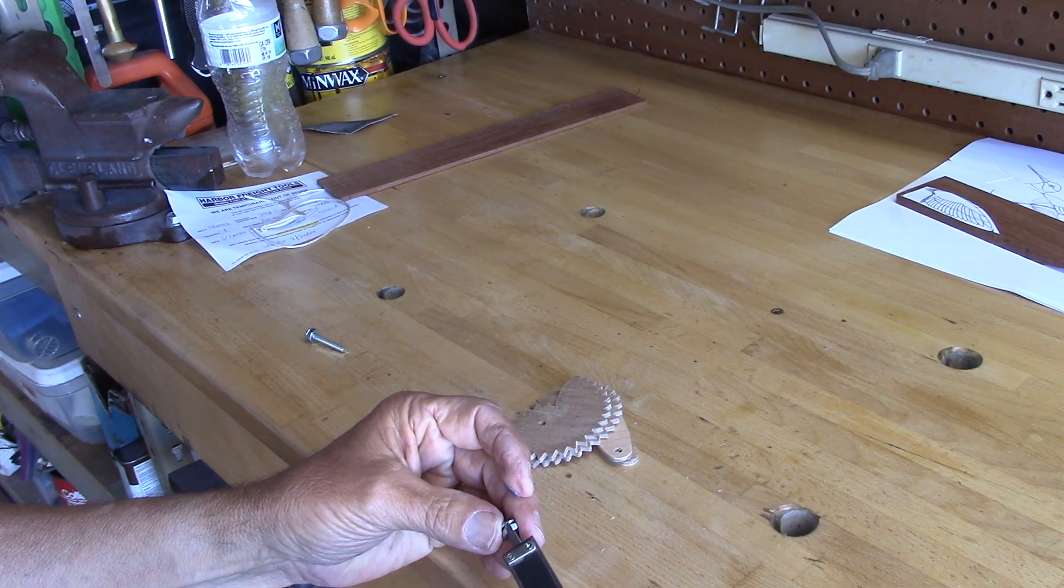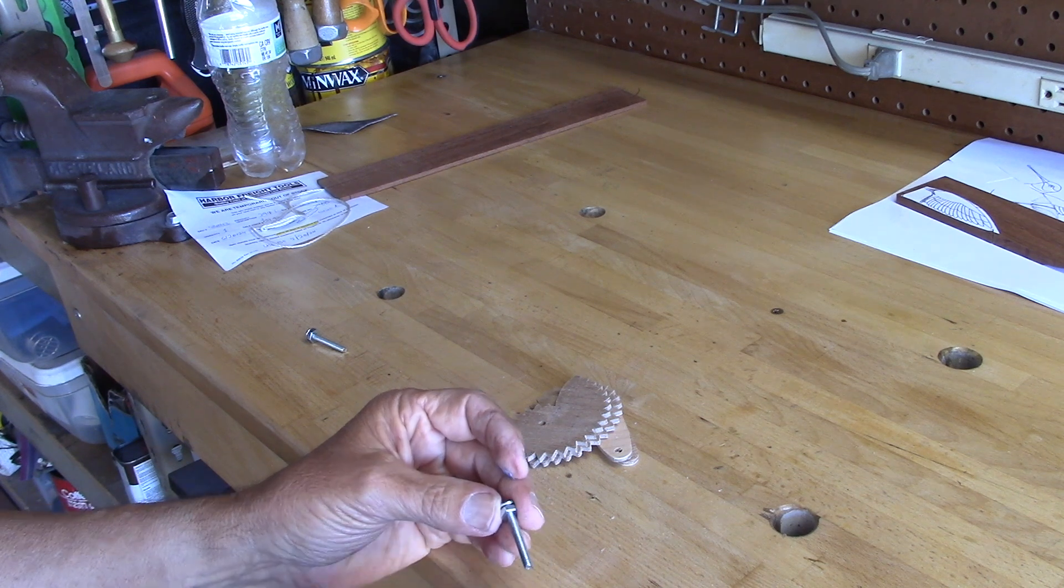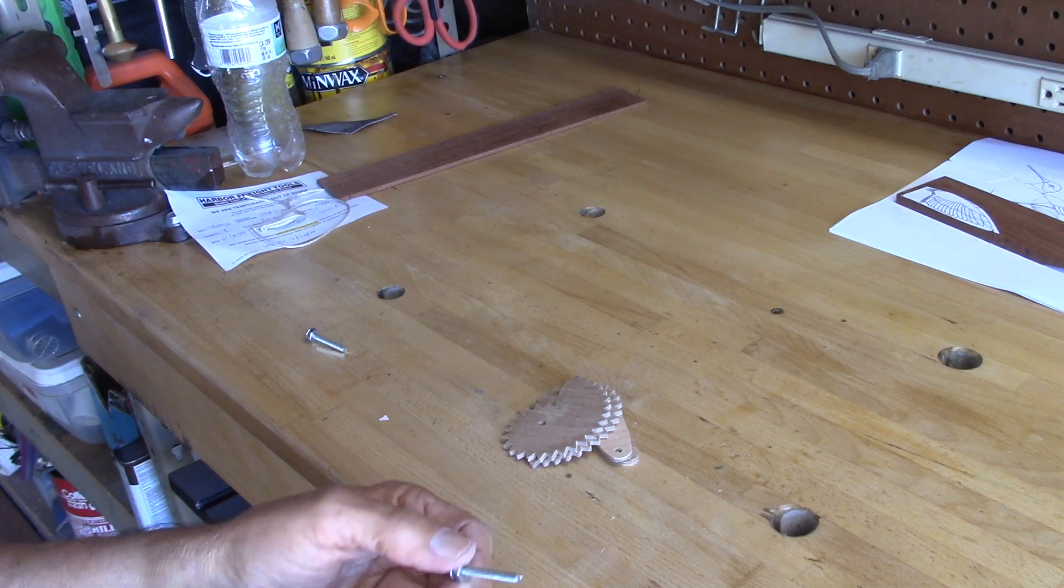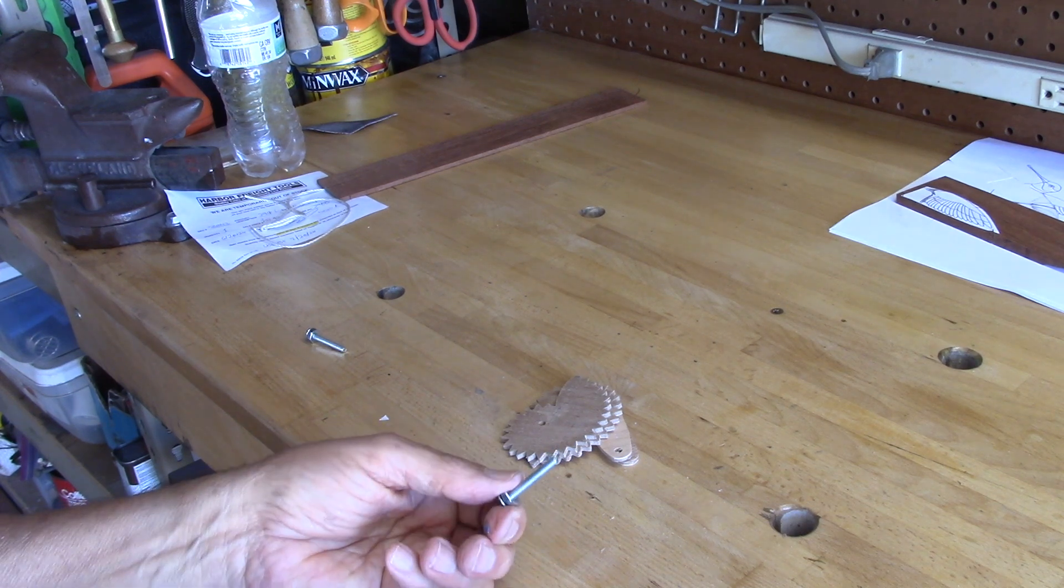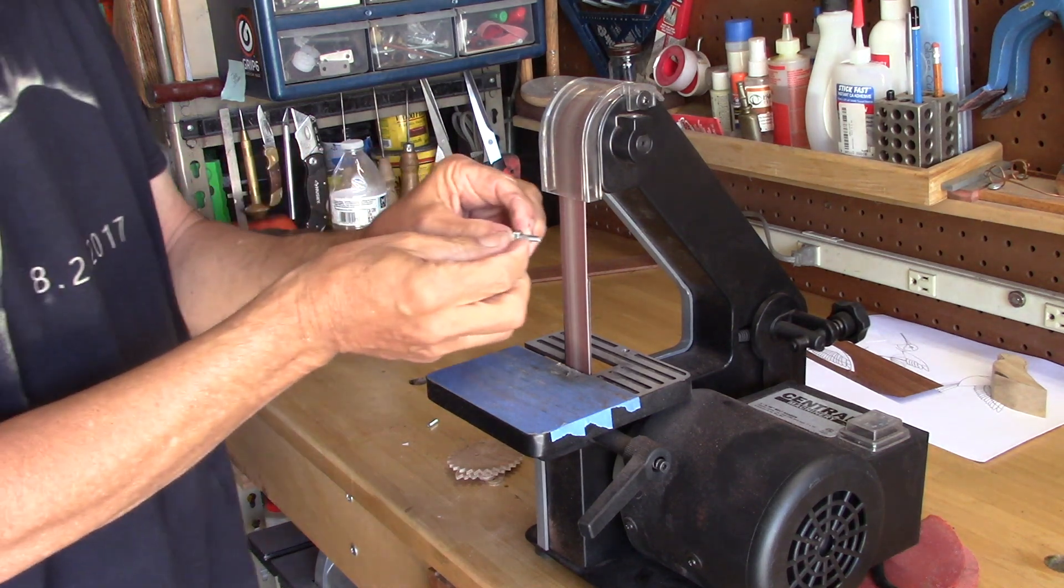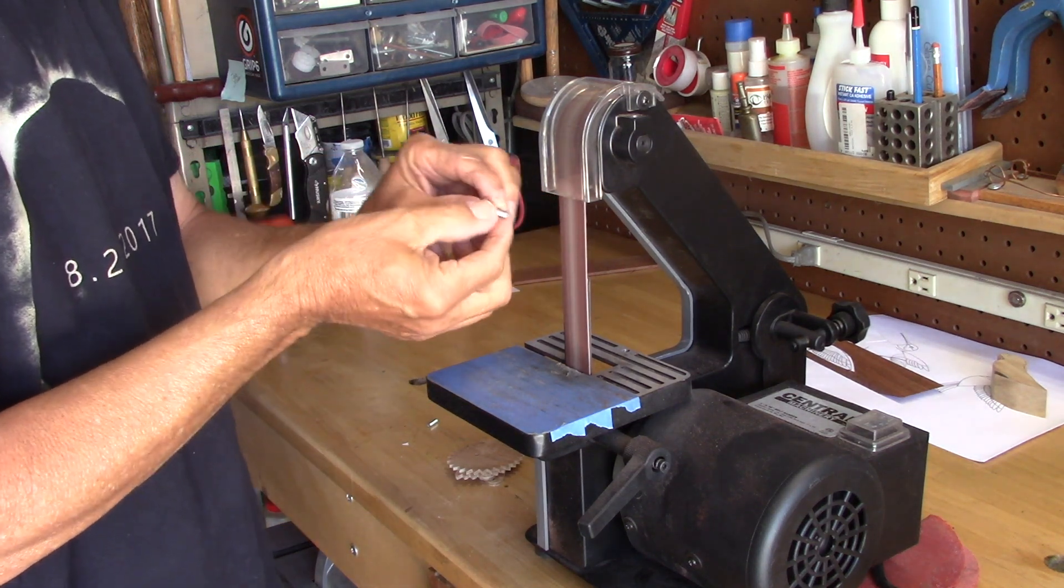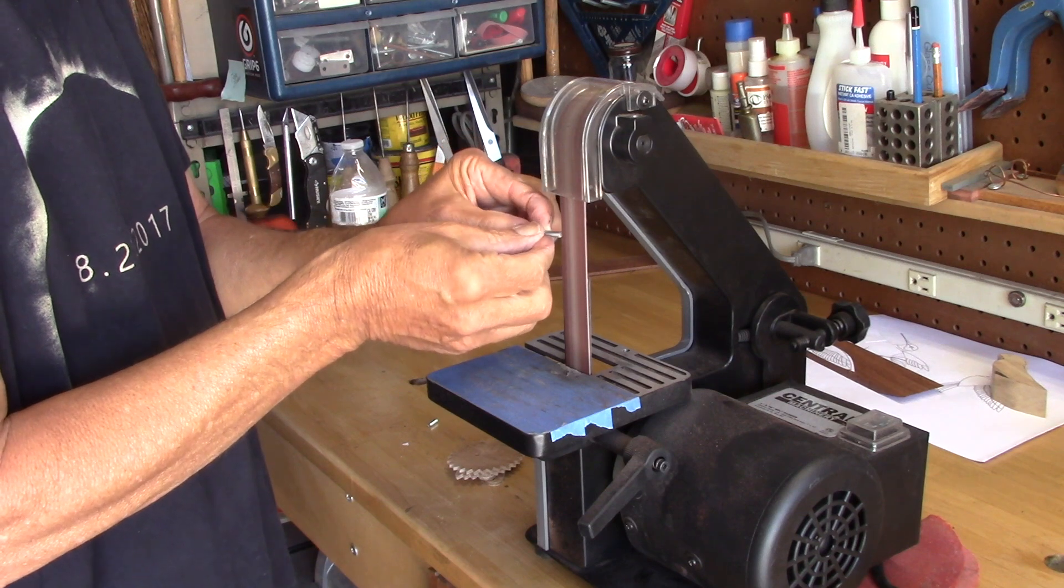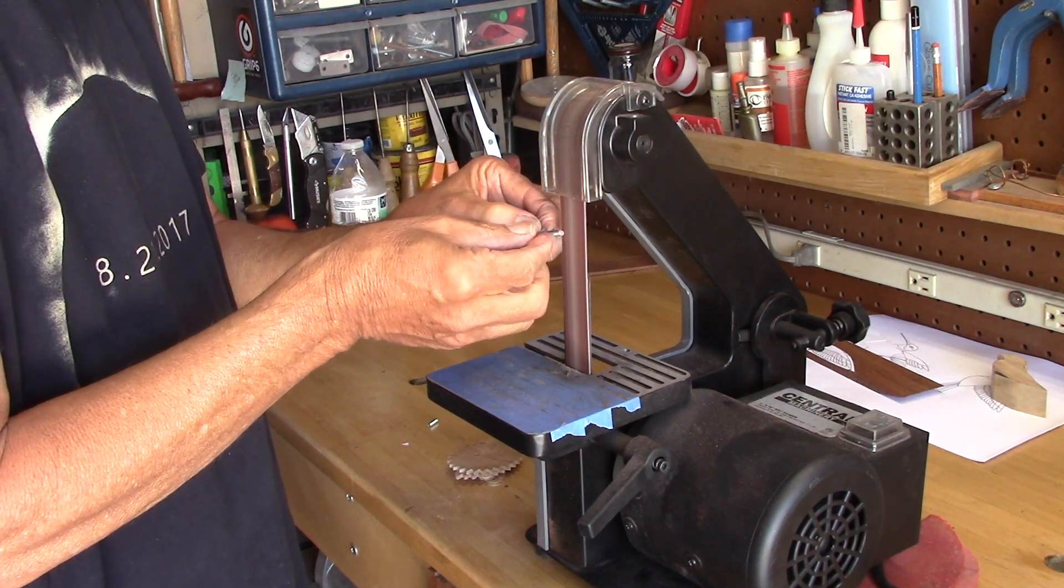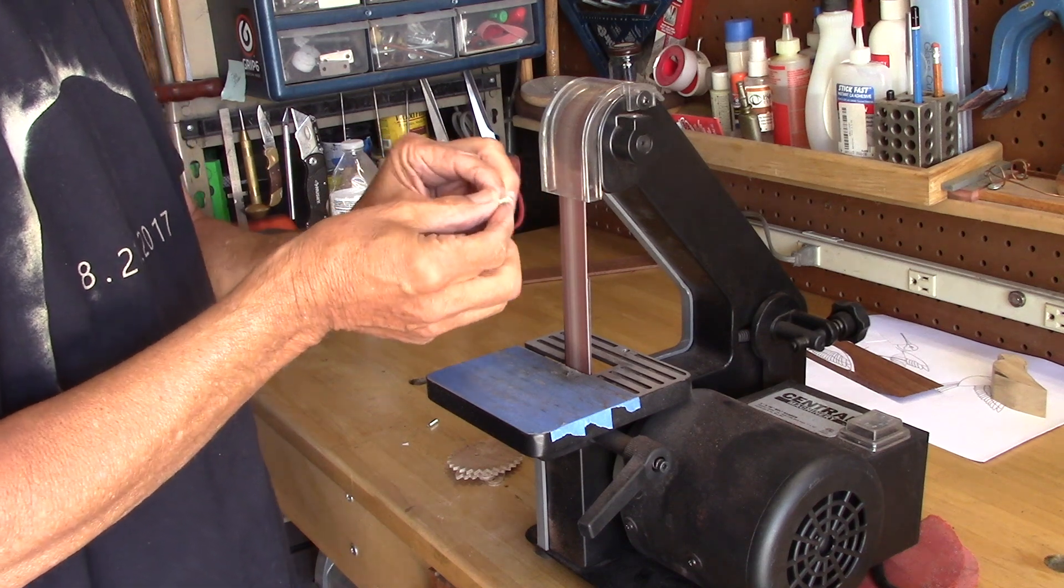Now I'm going to take that bolt and put it in my vise thread first because I don't care about the threads on the end that I'm going to throw away and then I can saw it off. When I'm done I can take that sawed off piece of bolt and spin it very carefully. You beginners be careful with this because that thing will shoot out of your hand like a bullet.